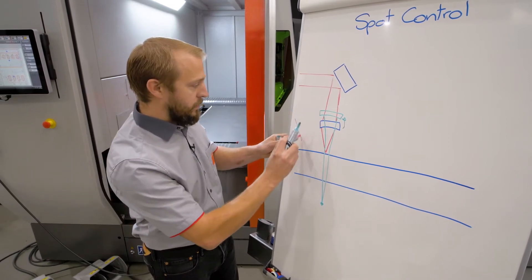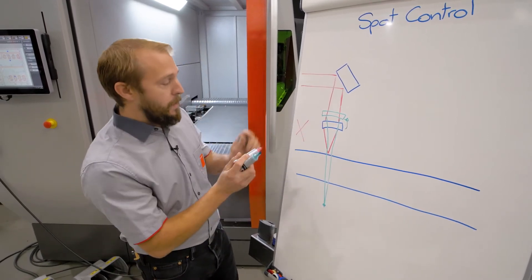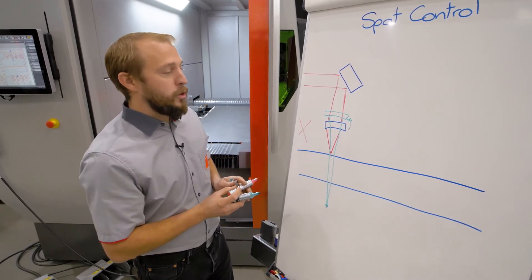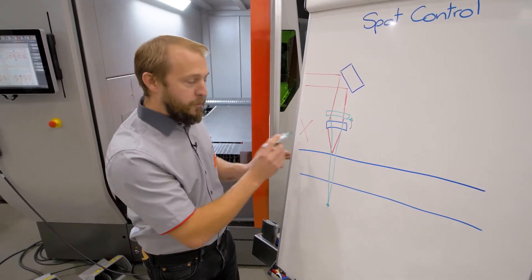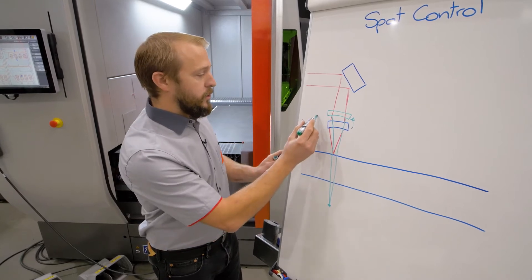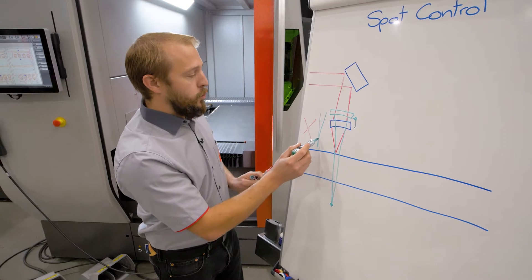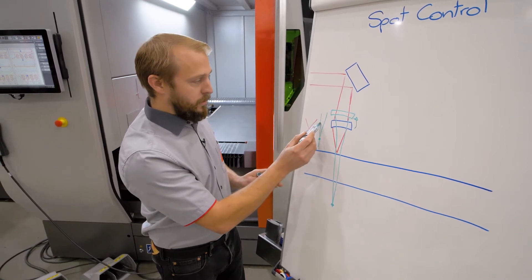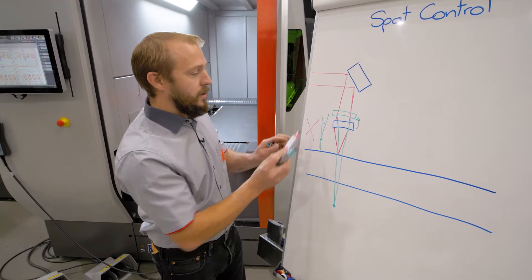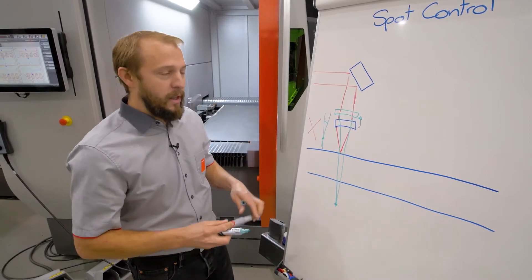One is a very big angle with a smaller spot, which is perfect for thin material. For thicker material, we are changing the shape to a slightly bigger spot, but as well quite a different angle. Now that makes the big difference.